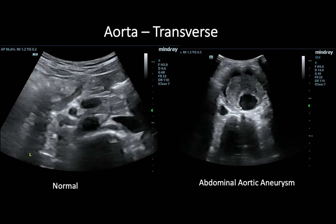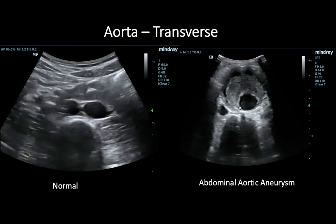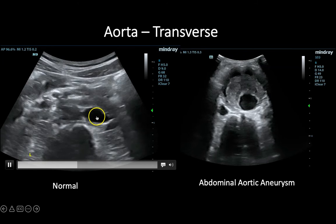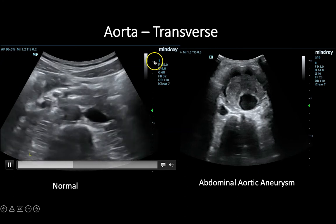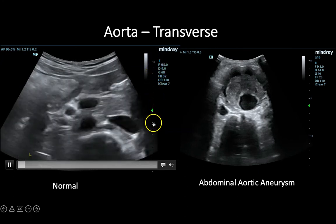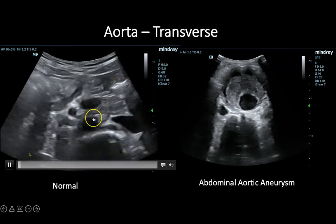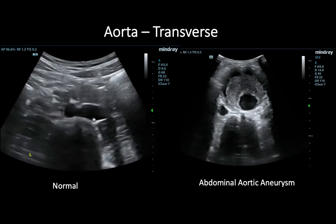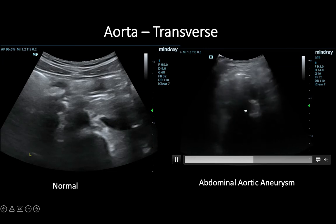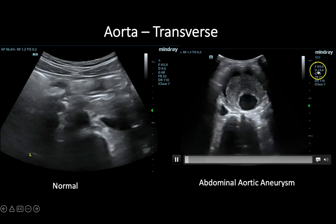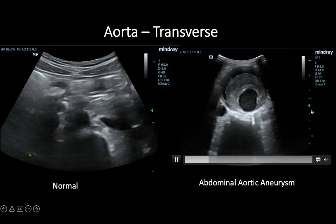Looking again at the normal aorta, we focus on its diameter. The normal diameter is below three centimeters. Using the centimeter markers on screen, we can appreciate that the normal aorta is well within that range. In the comparison scan, the diameter of the aorta is approaching six centimeters, which is consistent with an abdominal aortic aneurysm.